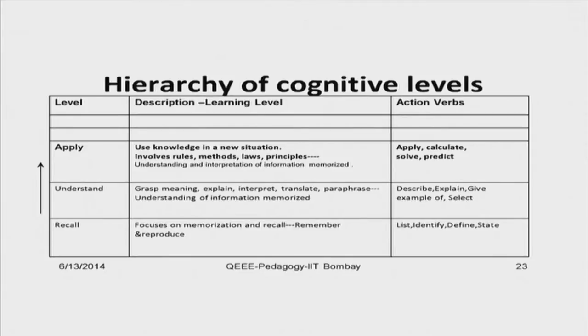To summarize the understand level: it is when the formula or concept is known to the student and they are applying it in a known or familiar situation. The next level — the third level — is apply. Apply means the knowledge is used in a new situation. Action verbs at this level include: apply, calculate, solve, predict. In the apply level, students have learned some concept and are trying to apply it to a new situation, going beyond just the familiar.